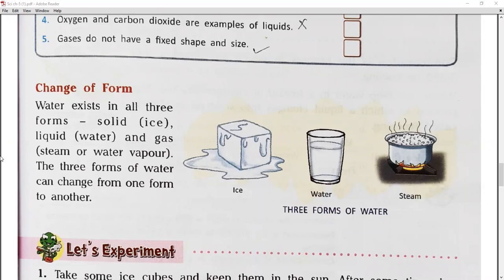Now suppose we have ice. Ice can change from one form, one state, to another state. This is change of form.